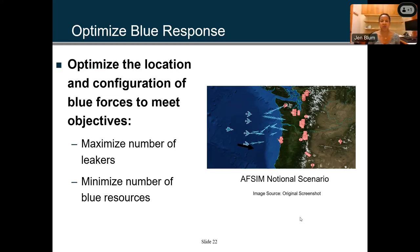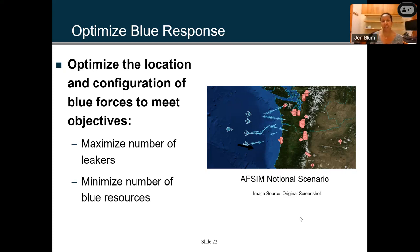Moving on to use cases: here is a notional scenario using AFSIM. We have a bunch of red threats on land and incoming blue forces. You want to optimize your blue response — specifically, optimize the location and configuration of your blue forces to meet certain objectives. For example, you want to maximize the number of hits on red assets, and also minimize the number of blue resources needed to achieve those maximum hits.